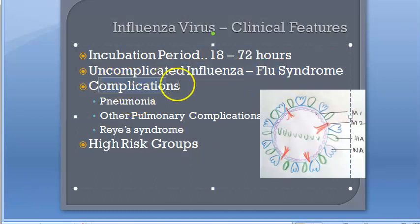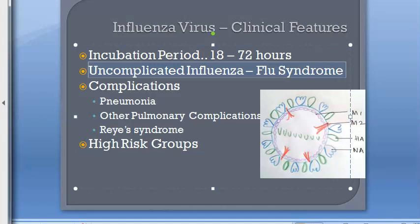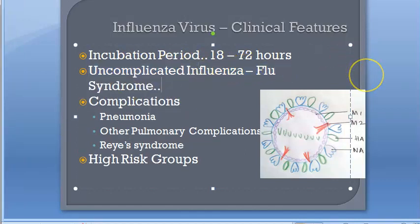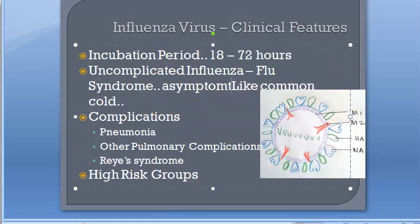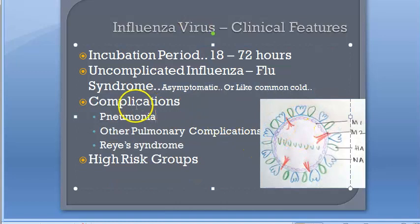There are two presentations: uncomplicated influenza and complicated influenza. In uncomplicated influenza, also called flu syndrome, patients may be asymptomatic or have minor upper respiratory symptoms like chills, headache, dry cough, high fever, myalgia, and anorexia. It is self-limiting and indistinguishable from other upper respiratory tract infections — essentially like a common cold.